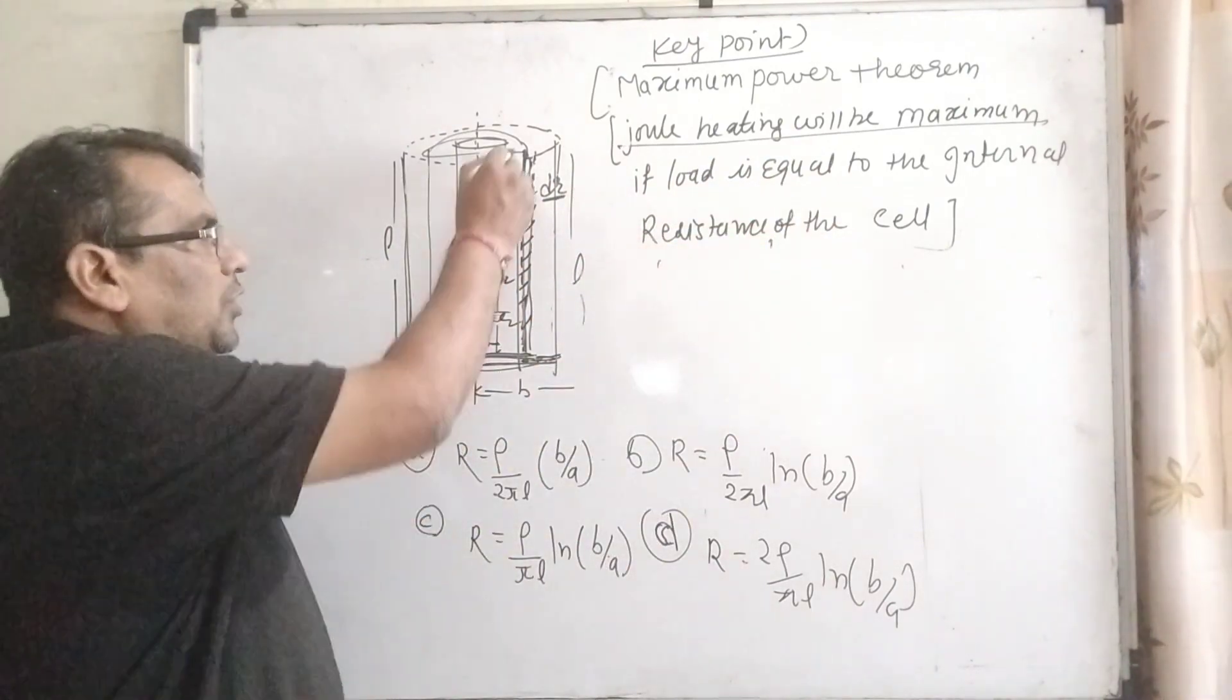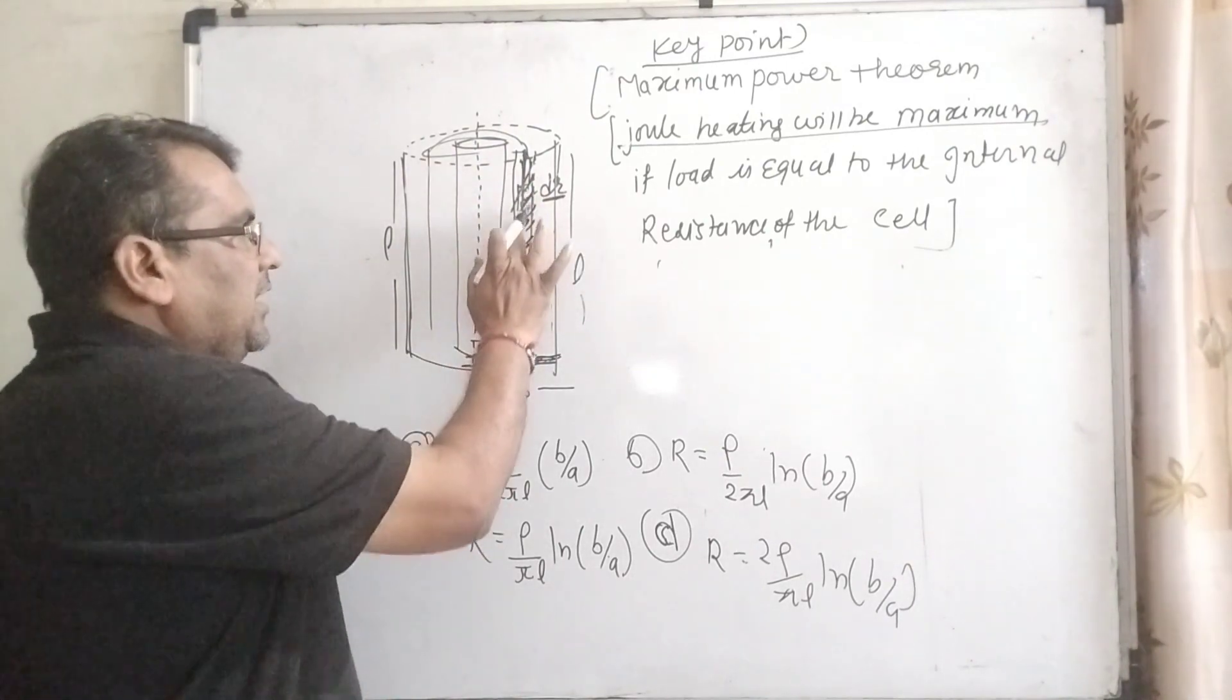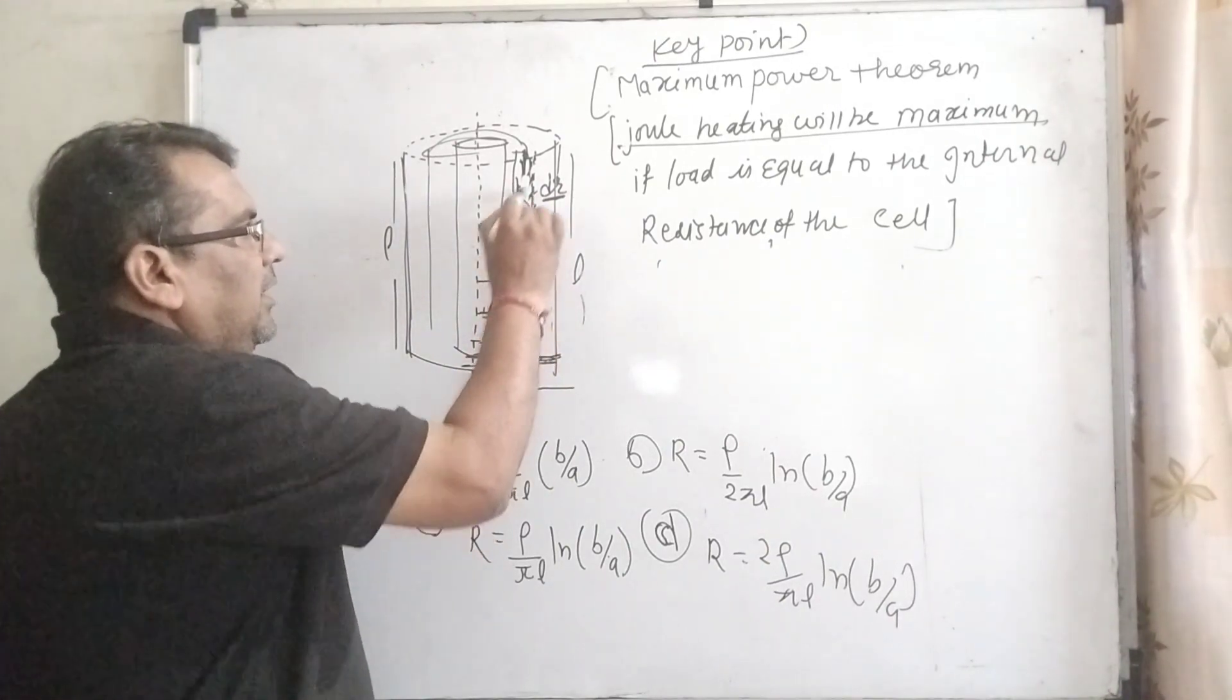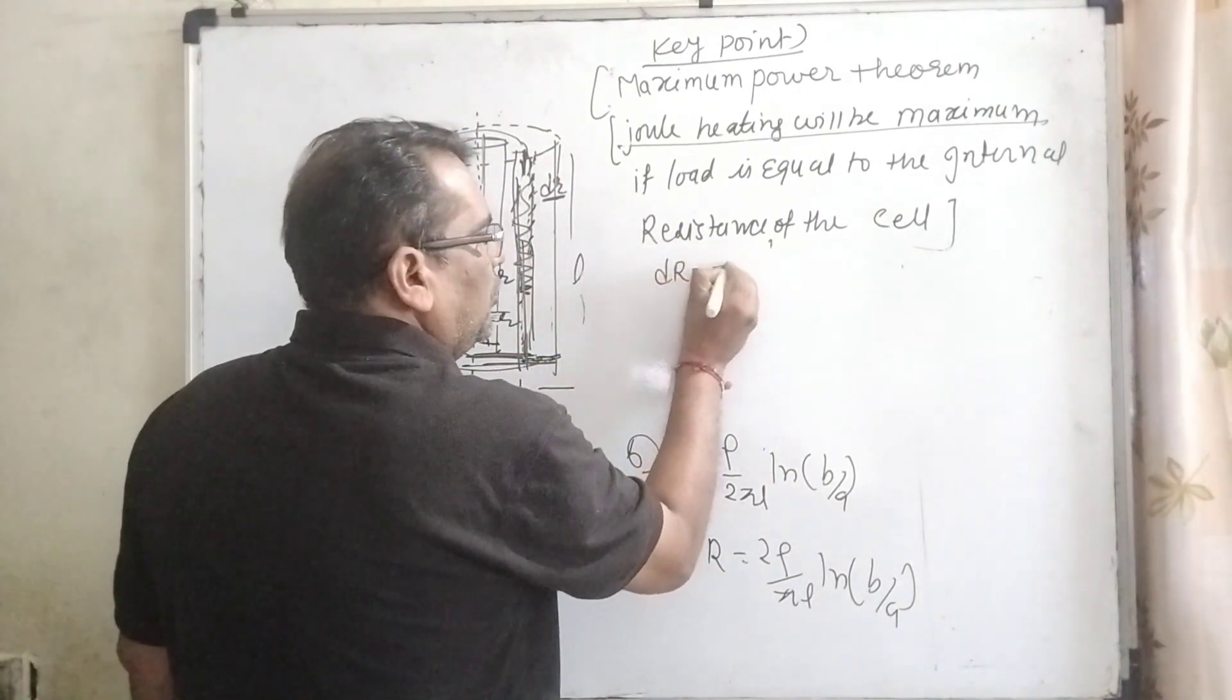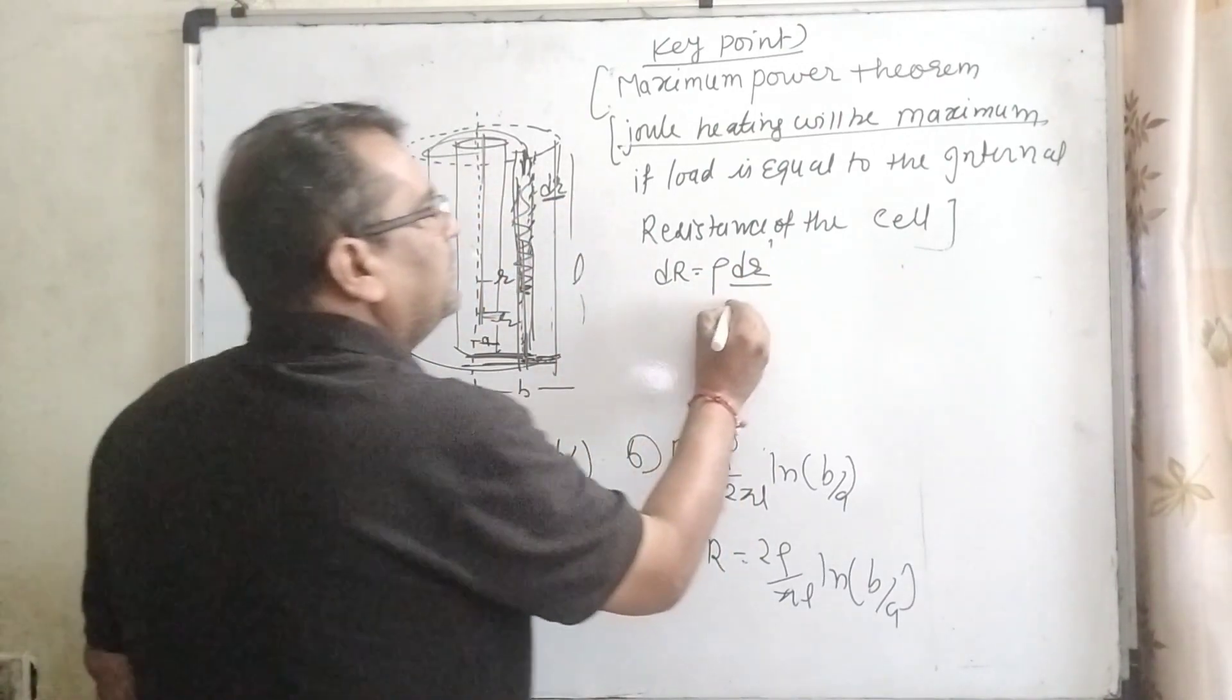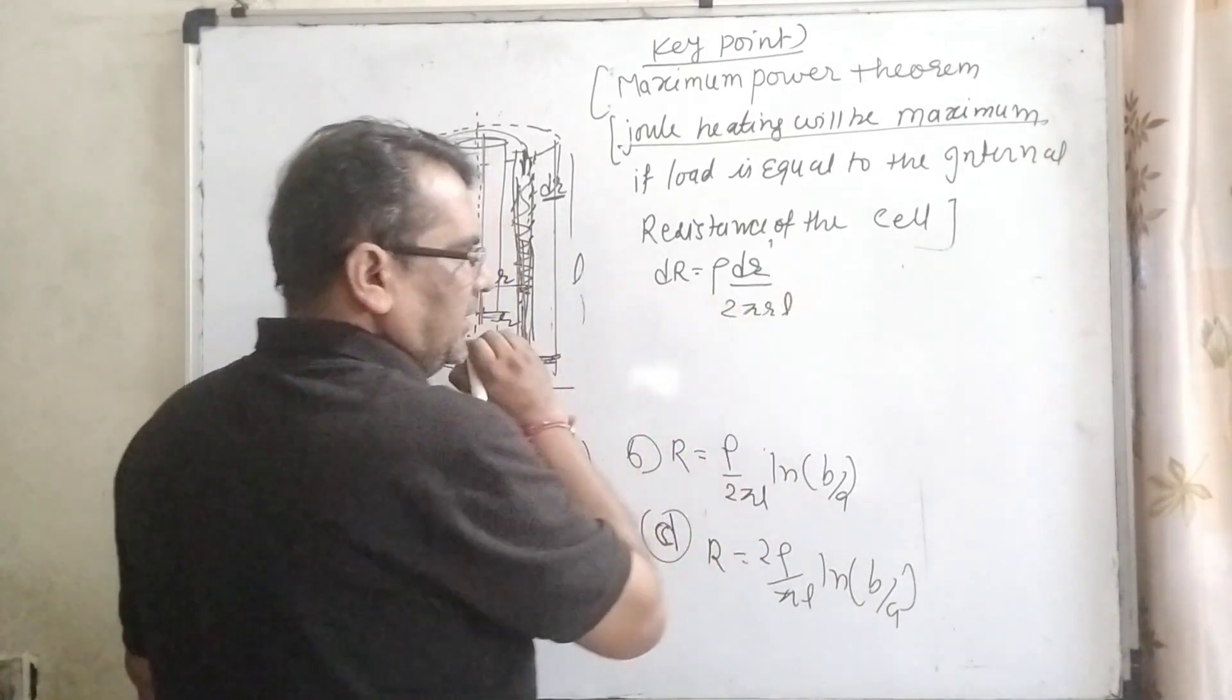So, let us first cut an elementary part of this shell. Let us consider its width is dr and distance from the axis is r. So, here dR equals rho dr upon what is the area? 2πRL. R is the distance from the axis, this elementary part is dr, and total length is L.